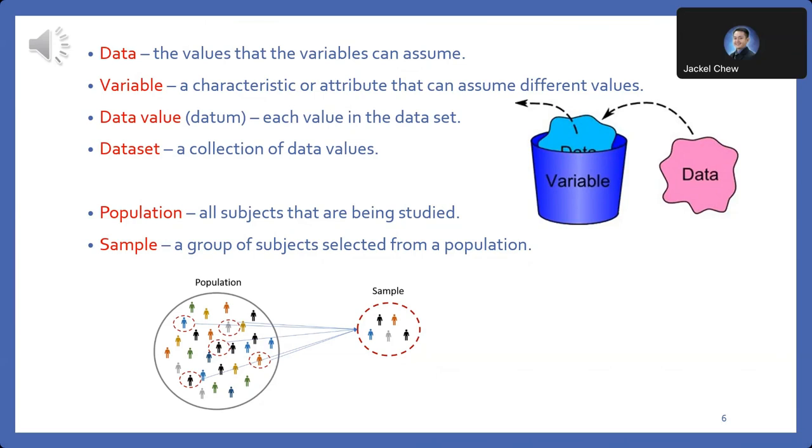Population comprises all subjects or entities under study. It represents the entire group we seek to understand or analyze. A sample is a subset of subjects selected from the population. It serves as a representative subset, allowing us to make inferences about the population.